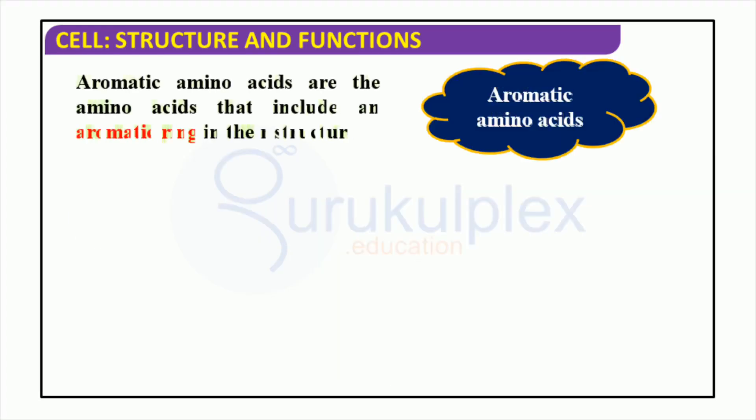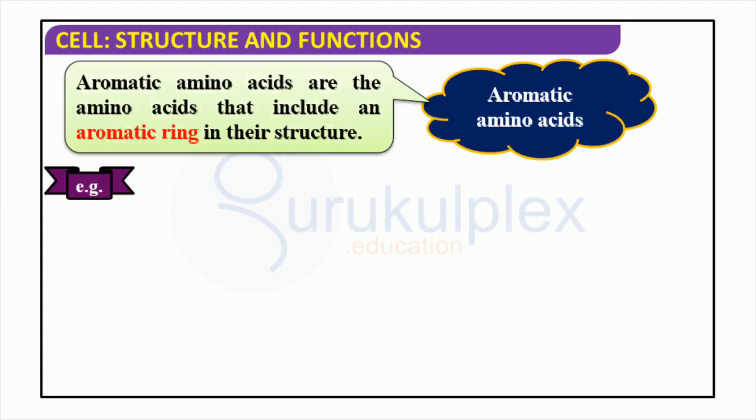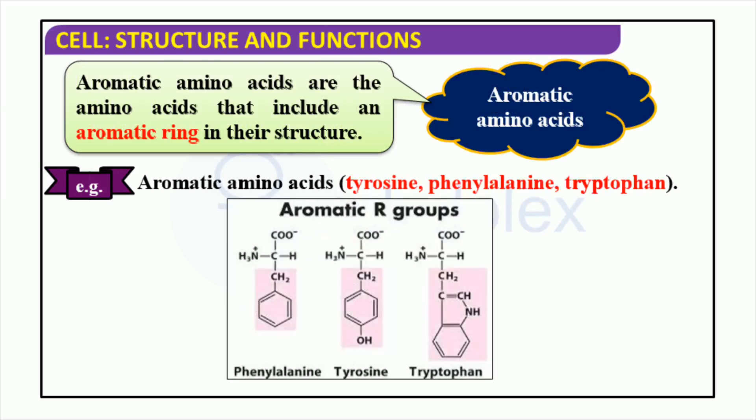Three essential aromatic amino acids for all forms of life are tyrosine, phenylalanine, and tryptophan. These molecules have special properties attributed to their aromatic rings, which can affect protein structure, enzyme activity, and hormone levels in our bodies. Thus, they are vital to a variety of biological functions.